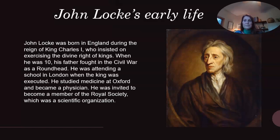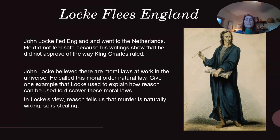John Locke's early life: John Locke fled England and went to the Netherlands. He did not feel safe because his writing showed that he did not approve of the way King Charles ruled. John Locke believed there are moral laws at work in the universe — he called this moral order natural law. One example Locke used to explain how reason can discover these moral laws is that reason tells us that murder is naturally wrong, and so is stealing.